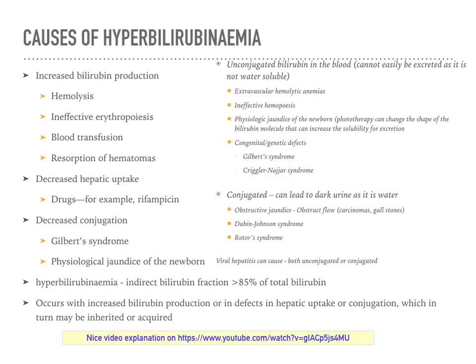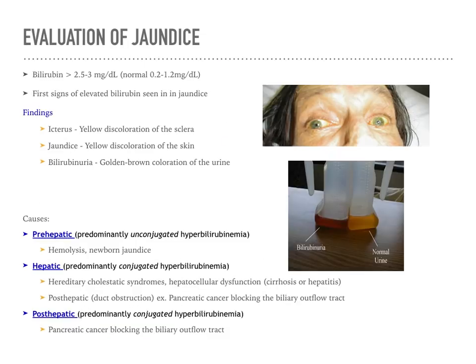Overall causes of increased bilirubin include increased bilirubin production, decreased hepatic uptake from certain drugs, and decreased conjugation based on illnesses such as Gilbert's disease. In the evaluation of jaundice, we look at bilirubin greater than 2.5 to 3 mg/dL. First signs of elevated bilirubin may include icterus — yellow discoloration of the sclera — jaundice, which is yellow discoloration of the skin, and bilirubinuria, which is a golden-brown discoloration of the urine.